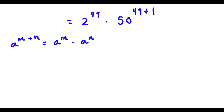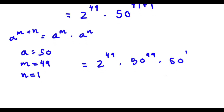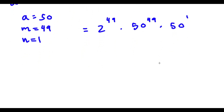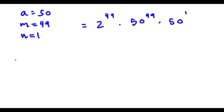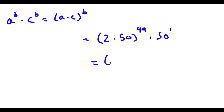So this gives me 2 to the power of 49 times 50 to the power of 49 times 50 to the power of 1. Now if I have a to the power of b times c to the power of b, this is the same as (a times c) to the power of b. Since 2 to the 49 and 50 to the 49 have the same exponent, I can multiply their bases: 2 times 50 equals 100. So now I have 100 to the power of 49 times 50 to the power of 1.